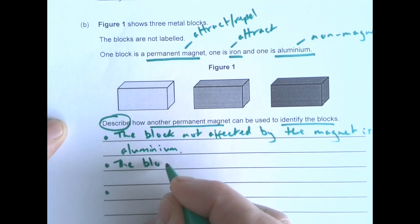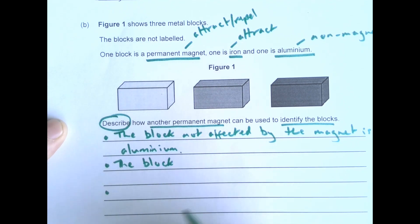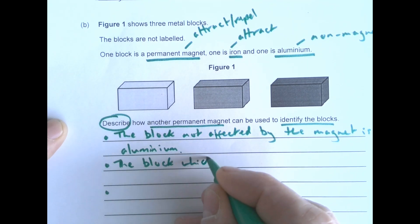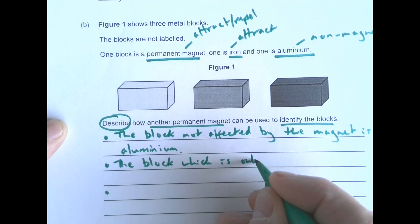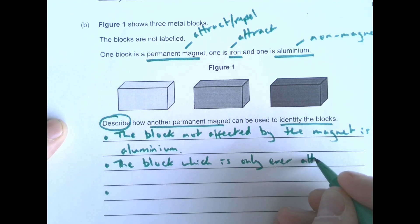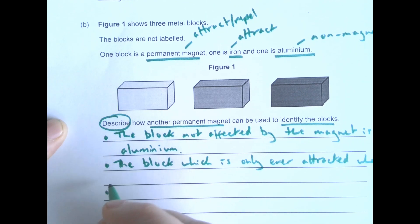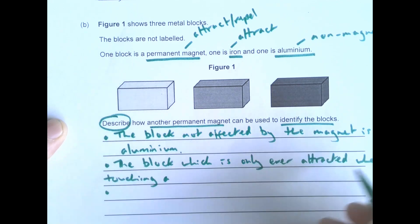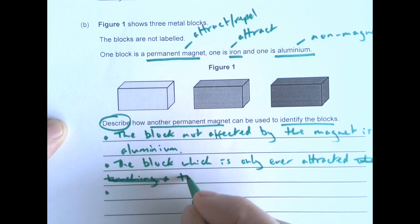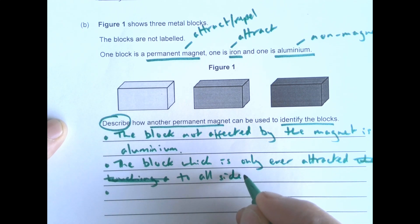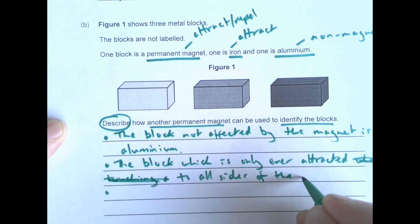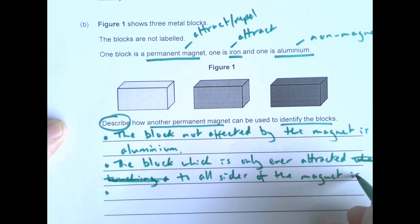The block which is attracted from every side, which is only ever attracted when touching any sides, or attracted to all sides of the magnet, is iron.